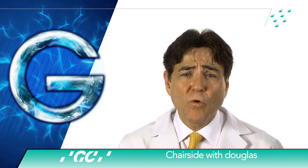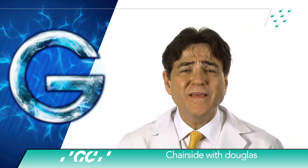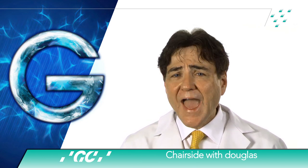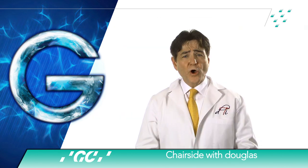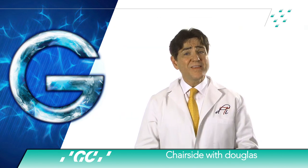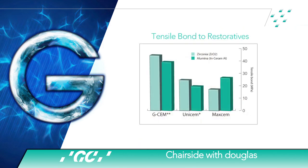A research study by Seto et al. at the University of California reports that GCM is the only self-adhesive system that actually improves bond strength to dentin, enamel, and zirconia restorations after thermocycling. While Matsumoto et al. at GC R&D reports that GCM not only has high bond strength but also high bond stability to ceramics.